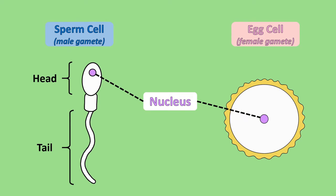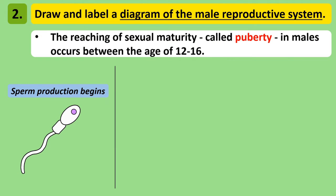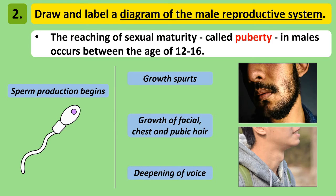The sperm cell has a long tail, which allows it to swim through the female reproductive system to find the egg and fertilise it. Males begin to produce sperm cells once they become sexually mature, usually between the ages of 12 to 16 — this is called puberty. Other changes that take place in a male during puberty include growth spurts, growth of facial, underarm and pubic hair, and the deepening of the voice as the voice box or larynx enlarges.